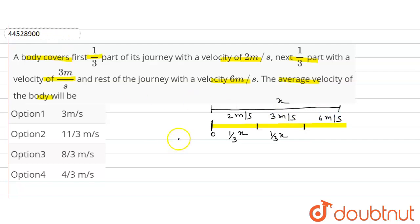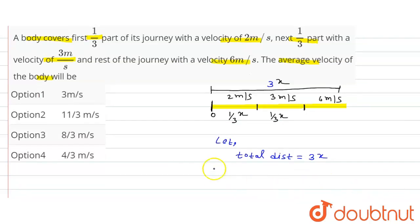We have to find the average velocity. Let the total distance be 3x. The journey takes place in three parts: x distance at 2 meters per second, x distance at 3 meters per second, and x distance at 6 meters per second.